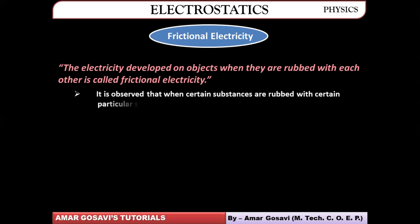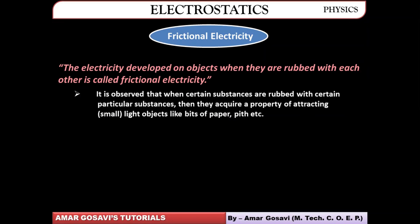We have observed these things so many times in day-to-day life. If certain substances are rubbed against certain particular substances, they acquire the property of attracting. For example, you might have used plastic scales — you rub one with hair and they get the property of attracting bits of paper. It's because of the frictional electricity being generated.